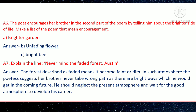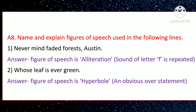Question A7: Explain the line 'Never mind the faded forest.' The forest is described as faded, meaning it has become dim or dull. In such an atmosphere, the poetess suggests to her brother that even though life may seem like a gloomy, faded forest, there is brightness ahead. He should neglect the present difficult atmosphere and wait for a good atmosphere to develop his career.